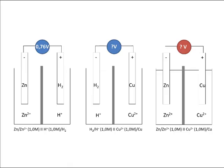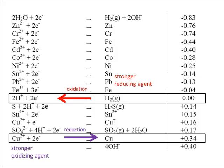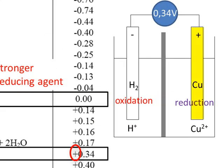A similar situation applies to the hydrogen-copper cell. This simply replicates what someone did when drawing up the table using a hydrogen electrode and a copper electrode. Under standard conditions, the potential difference between the two would be 0.34 volts. The positive sign means the copper electrode is the positive terminal, and the hydrogen electrode is the negative terminal.